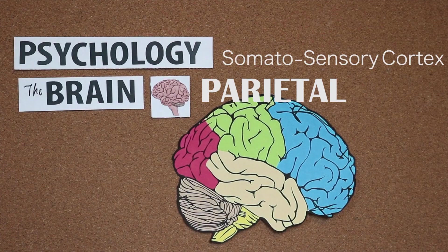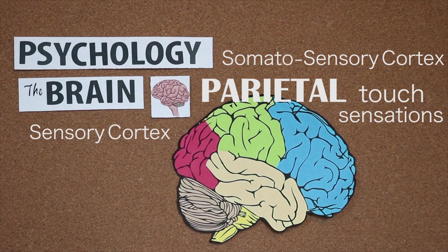In the parietal lobe, we have our somatosensory cortex, or as I called it before, our sensory cortex, which receives touch sensations, as well as information about our body's temperature and position.